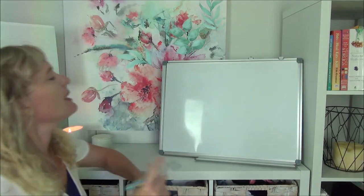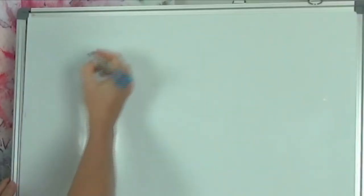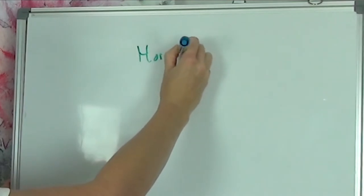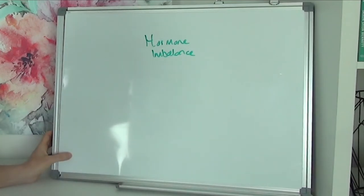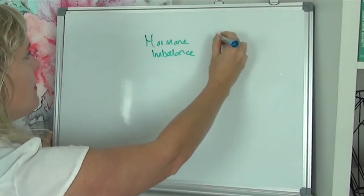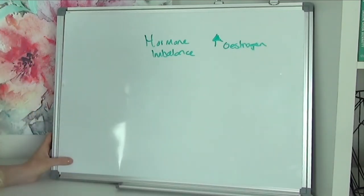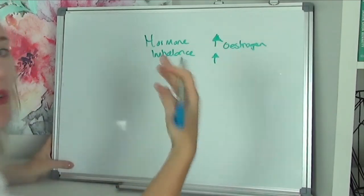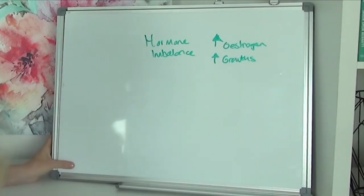If we imagine some of the key symptoms that you experience with endometriosis, one of the first ones that most of us are familiar with is hormone imbalance. Hormone imbalance tends to cause too much estrogen. Too much estrogen triggers more endometriosis growth. Estrogen is a growth stimulating hormone, so it naturally will cause more endometriosis growths.